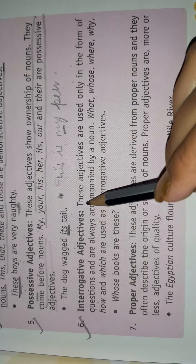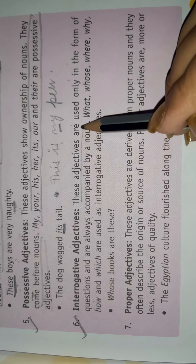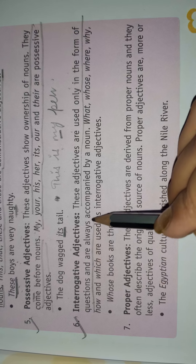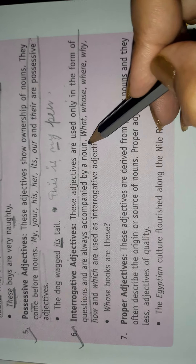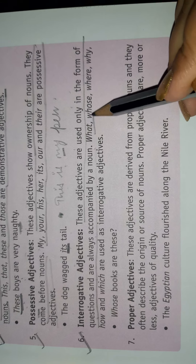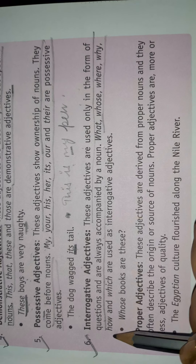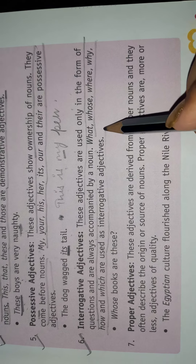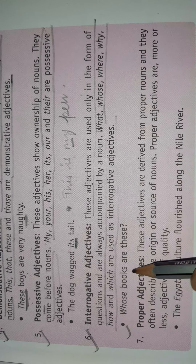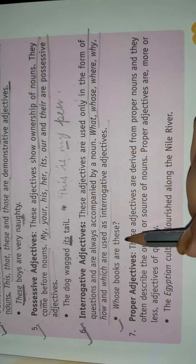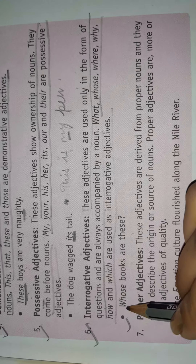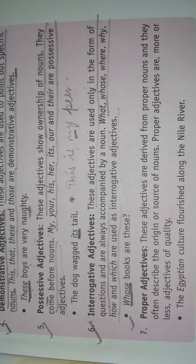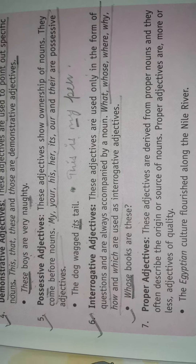Number six: Interrogative Adjective. These adjectives are used only in the form of questions and are always accompanied by a noun. What, whose, where, why, how, and which are used as interrogative adjectives. For example: 'Whose books are these?' — here 'whose' is an interrogative adjective.